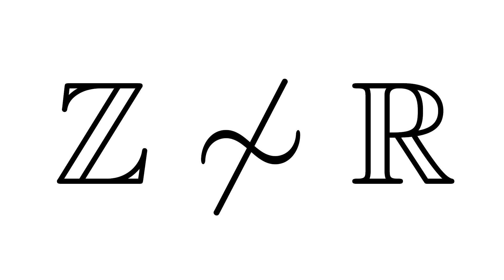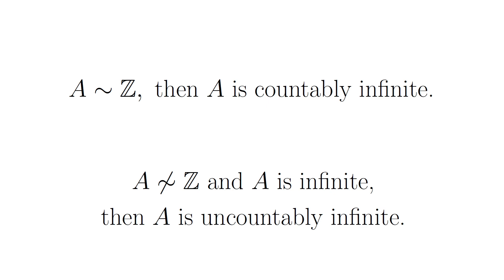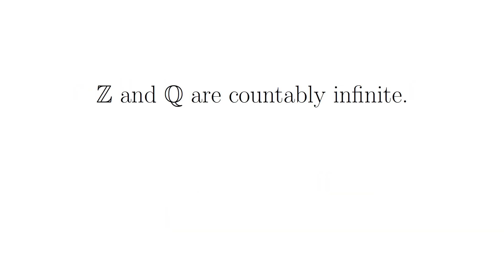So there are, not surprisingly, a strictly larger number of real numbers than integers. Any set that has a one-to-one pairing with the integers is called countably infinite, because you can count them in some sense. Any infinite set that does not have a one-to-one pairing with the integers is called uncountably infinite. So the integers and the rational numbers are both countably infinite, but the real numbers are uncountably infinite.